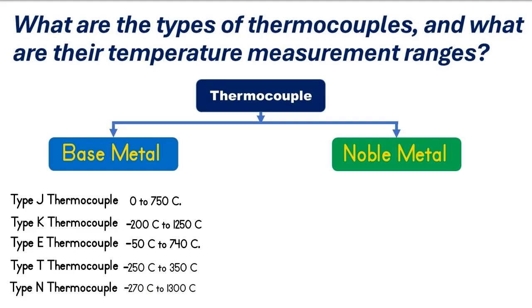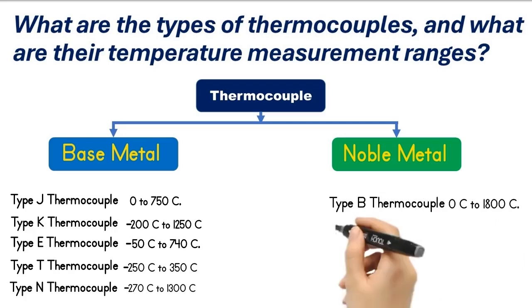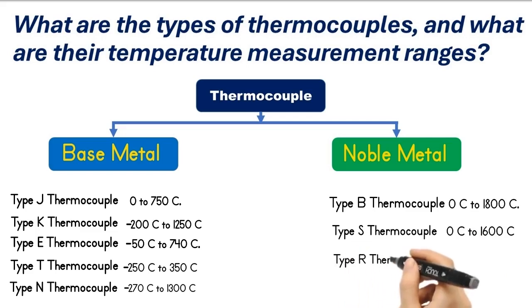There are three types of noble metal thermocouples. Type B thermocouple: the measurement range of type B thermocouple is 0 degrees Celsius to 1800 degrees Celsius. Type S thermocouple: the measurement range of type S thermocouple is 0 degrees Celsius to 1600 degrees Celsius. And Type R thermocouple: the measurement range of type R thermocouple is 0 degrees Celsius to 1482 degrees Celsius.